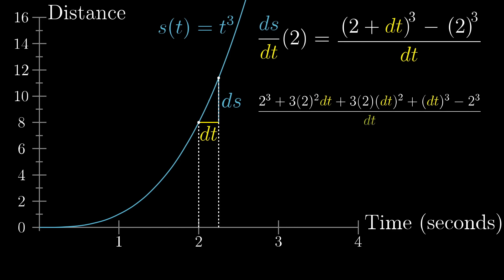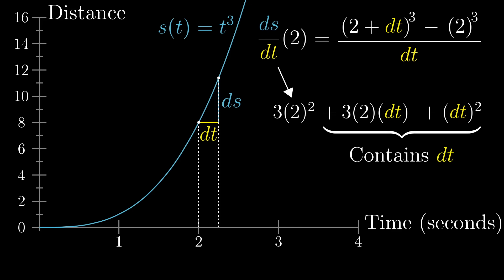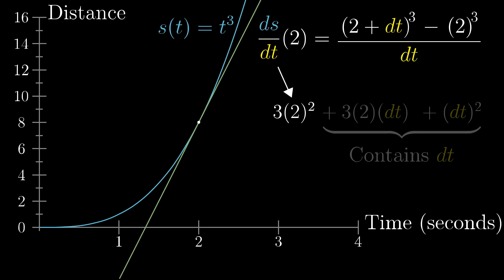Now there's a lot of terms, and I want you to remember that it looks like a mess, but it does simplify. Those 2 cubed terms, they cancel out. And then everything remaining here has a dt in it. And since there's a dt on the bottom there, many of those cancel out as well. What this means is that the ratio ds divided by dt has boiled down into 3 times 2 squared plus two different terms that each have a dt in them. So if we ask what happens as dt approaches 0, representing the idea of looking at a smaller and smaller change in time, we can just completely ignore those other terms.